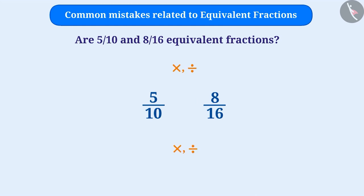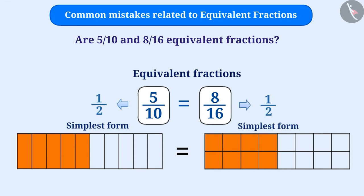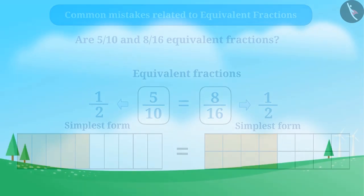As you can see, both 5/10 and 8/16 represent equal parts. So, they have equal values. That means, both are equivalent fractions. By finding the simplest form of the fraction also, we can check whether the given fractions are equivalent fractions or not.